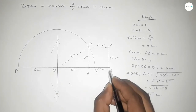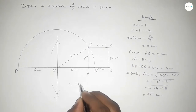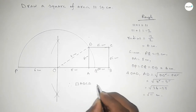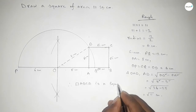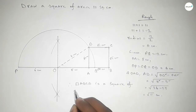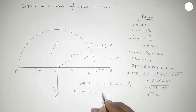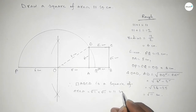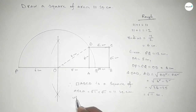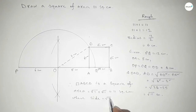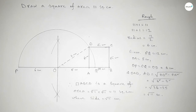Therefore, rectangle ABCD is a square of area = side × side = √11 × √11 = 11 square centimeters, where each side equals √11 centimeters. That's all — thanks for watching! If this video is helpful, please share it with your friends.